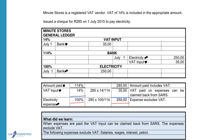The bank will be credited with 285 Rand. The VAT input will be debited with 35 Rand. That VAT input can be claimed back from SARS, so it is an asset for the business.